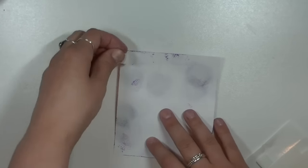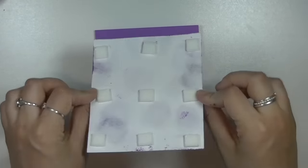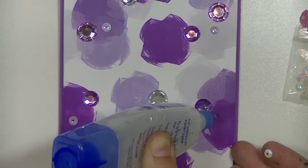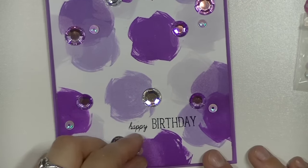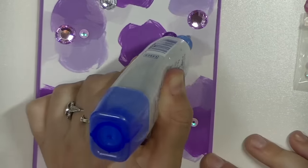Now I'm using the Tombow 3D foam tabs to add dimension to this card. I really wanted it to stand out. I'm using the Tombow Mono Aqua Liquid Glue to glue down my sequins. These are like an iridescent white but it picks up the purple on the card really nicely and adds an extra touch. I just really love how this card turned out. It's one of my favorites.